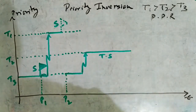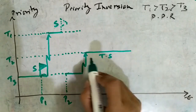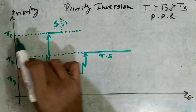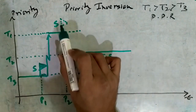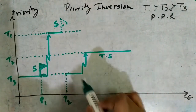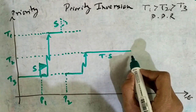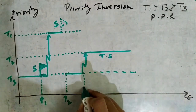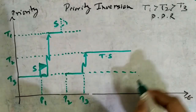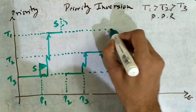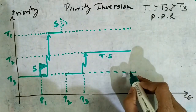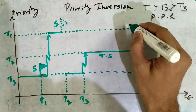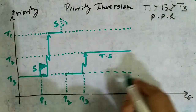T2 runs to exhaustion of its time slice. T1 cannot be scheduled because it is still waiting on the resource S in the resource wait queue, and T3 is of lower priority. Once T2 completes, the scheduler checks for the eligible task to run. T1 is still blocked on S, so T3 is allowed to run.